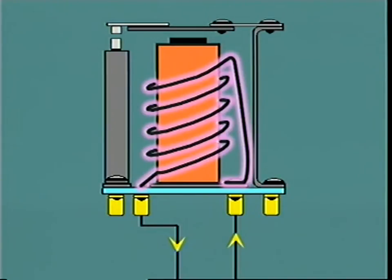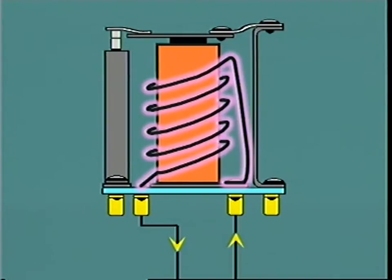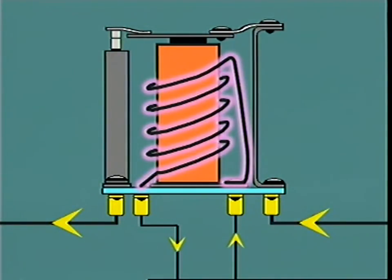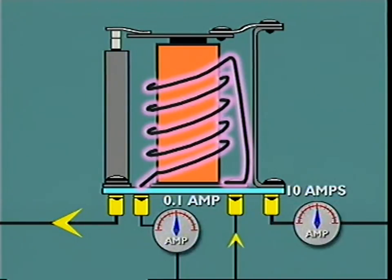When a small current energizes this electromagnet, it attracts an armature blade and closes contact points. Current that the relay is designed to switch on or off can then flow across the points. As long as the small switching current flows to the relay, the much larger current will flow through its contact points.